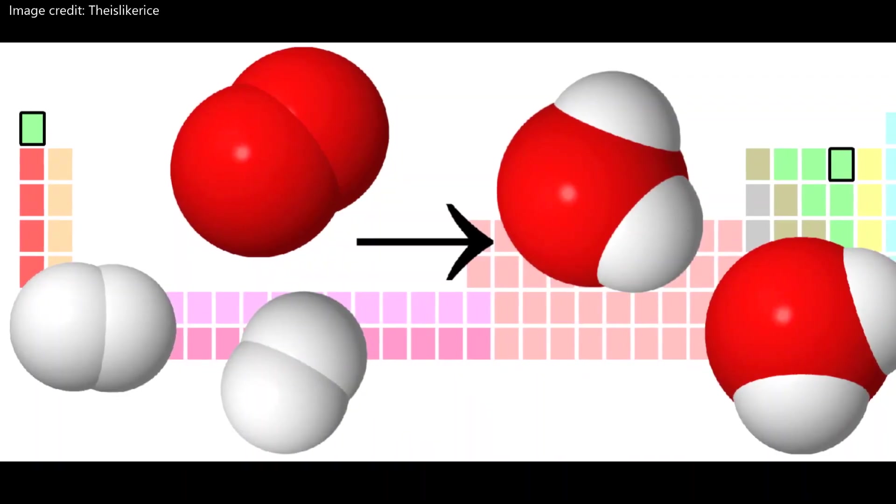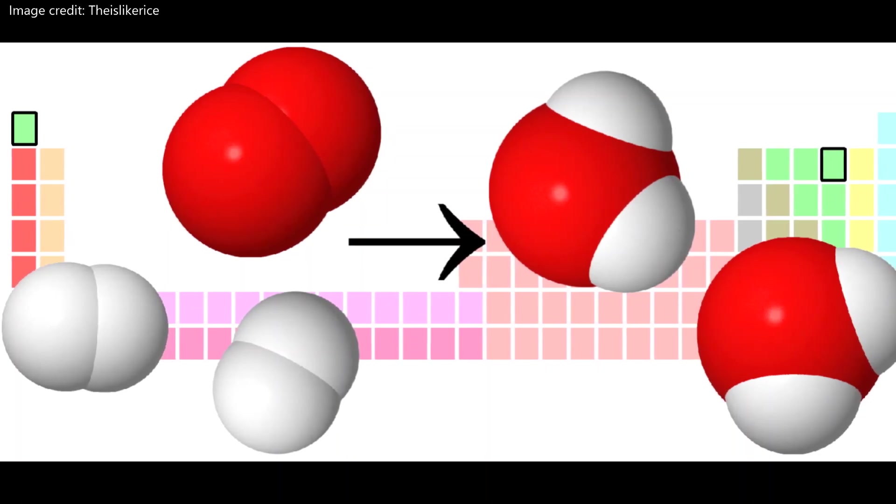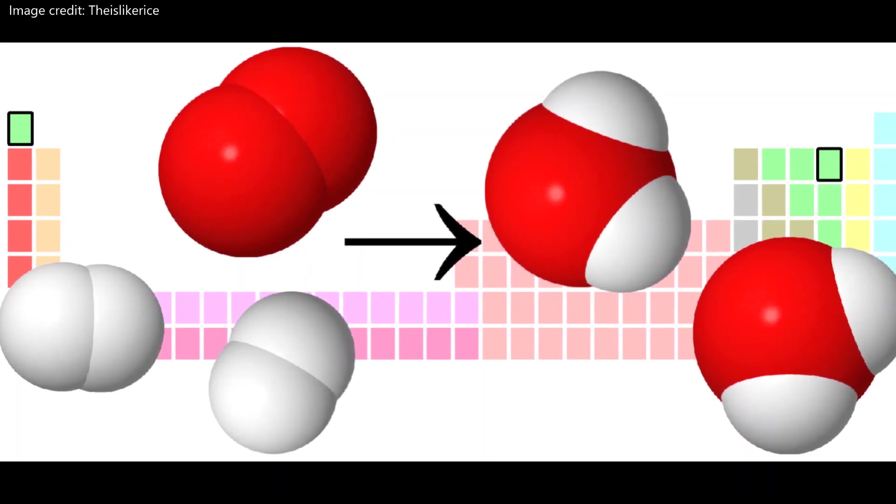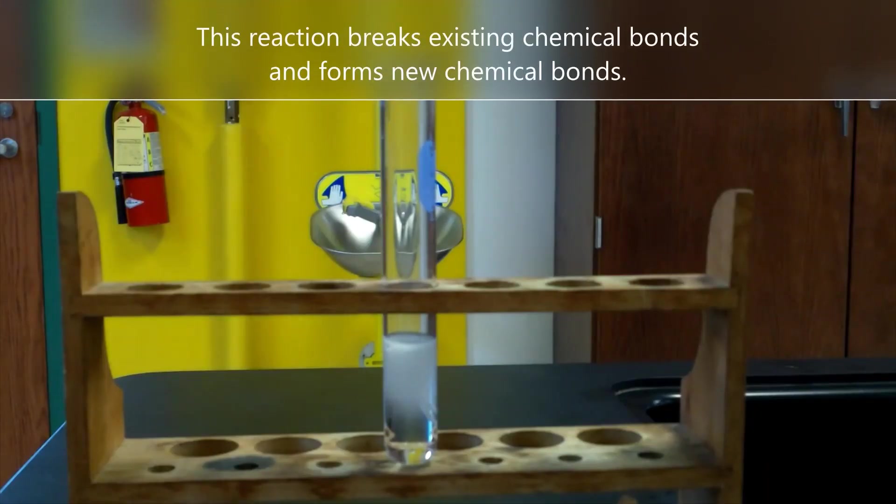To explain collision theory, let's look at the reaction that happens when hydrogen, H2 molecules, shown in white, combined with oxygen, O2 molecules, shown in red, to form water, H2O.